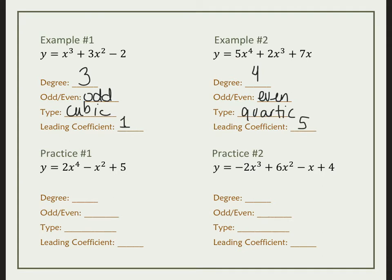Go ahead and pause this video and try practice question number 1 on your own. Check your work — it's a fourth degree, which is an even number. The name of a fourth degree is quartic, and my leading coefficient is 2.